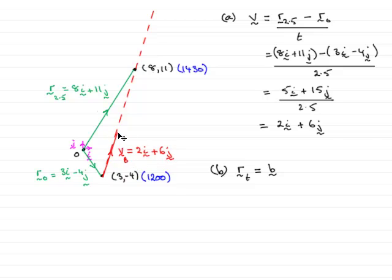Say one hour after noon, the boat would have been at this point here. It would have had this position vector across here, which would have been down here, plus one lot of this vector. That would have taken me to there. Two hours after noon, it would have been from about here to about there. That would have been down here, plus two lots of this velocity vector, and so on. So in general, if I just move that back to there,